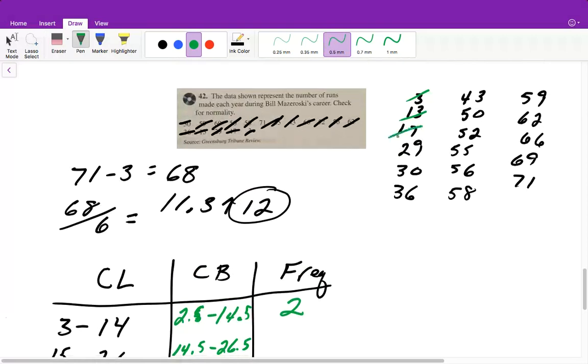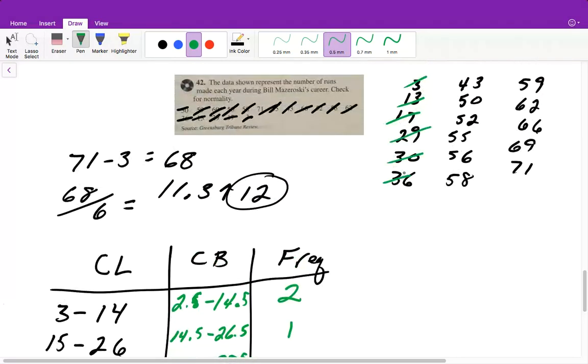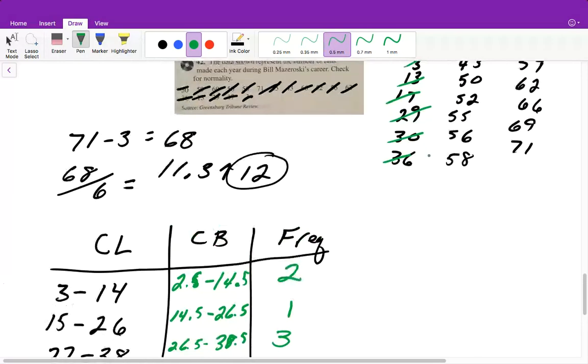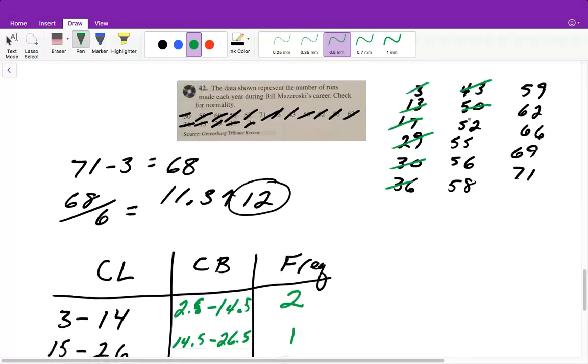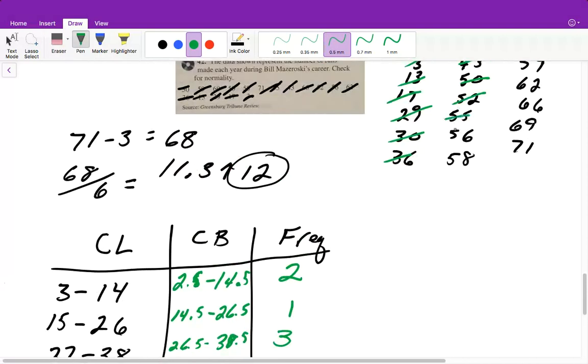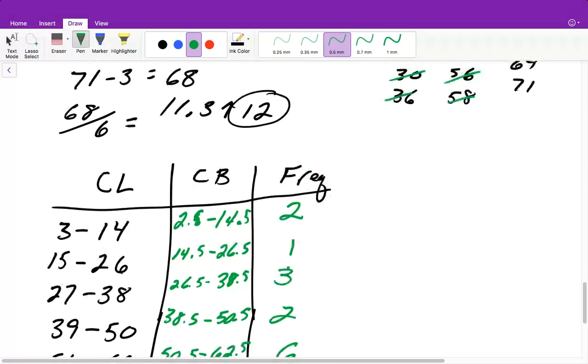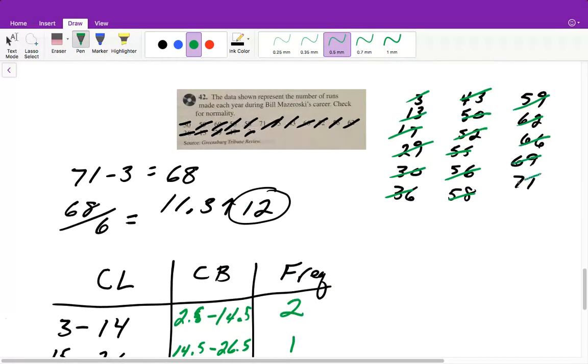Between 15 and 26, we have 1. Between 27 and 38, we have 1, 2, 3. Between 39 and 50, we have 1, 2. Between 51 and 62, we have 1, 2, 3, 4, 5, 6. And between 63 and 74, we have 1, 2, 3.